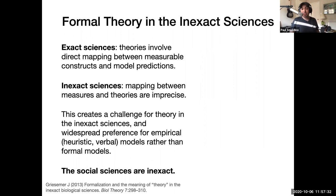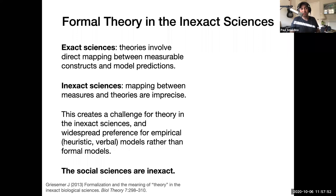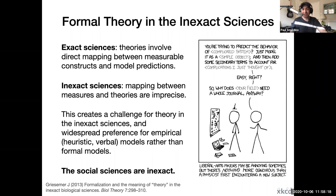The social sciences are inexact. We have to accept that theories will often be qualitative more than quantitative, and we must think hard about what we're measuring and what the relationship is between what we can measure, what we want to measure, and what our theories predict. The thing is: social systems are going to be modeled whether we like it or not, and we want the people modeling them to be social scientists — at least by inclination.